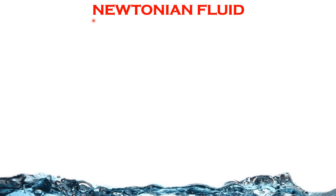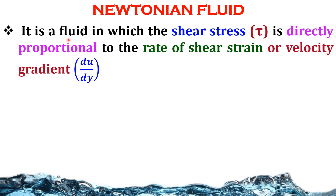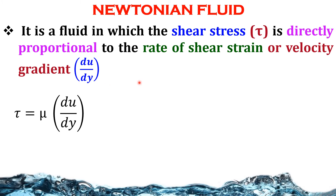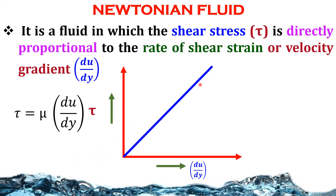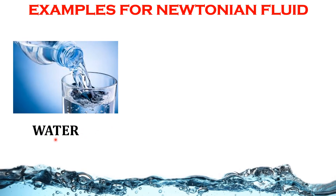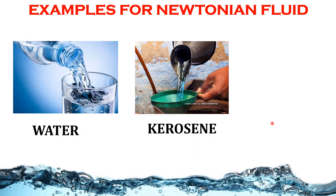Newtonian fluid: It is a fluid in which shear stress is directly proportional to the rate of shear strain or velocity gradient. Tau equals mu times du/dy. When we plot a profile between velocity gradient and shear stress, with velocity gradient on the x-axis and shear stress on the y-axis, we get a linear line, which indicates that an increase in velocity gradient results in an increase in shear stress. Examples of Newtonian fluids are water, kerosene, and mineral oil.